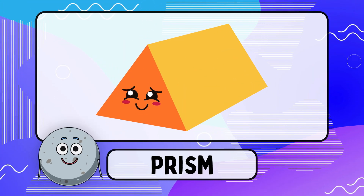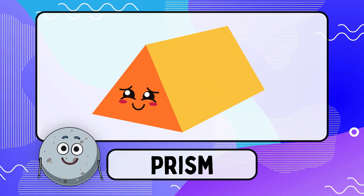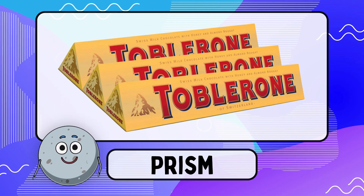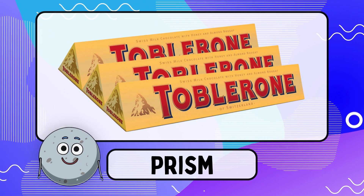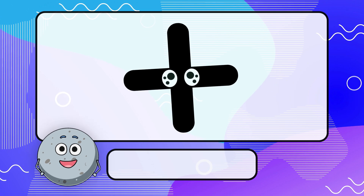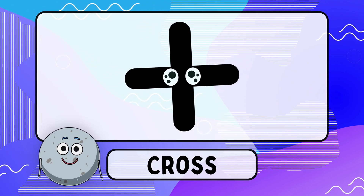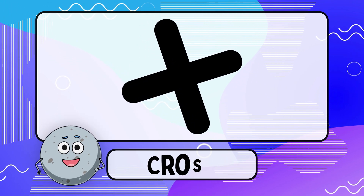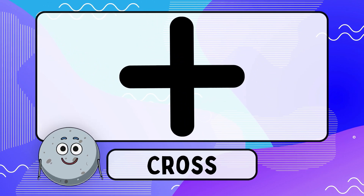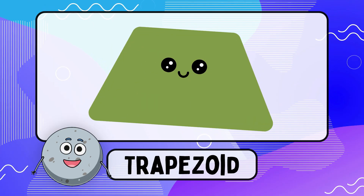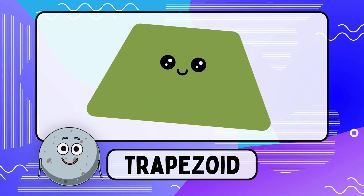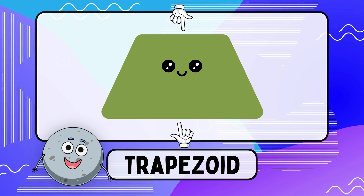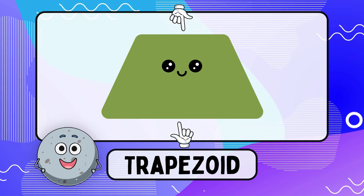Prism — the prism looks like a box of chocolate. Cross — the cross looks like a plus sign. Trapezoid — the trapezoid has one pair of parallel sides.